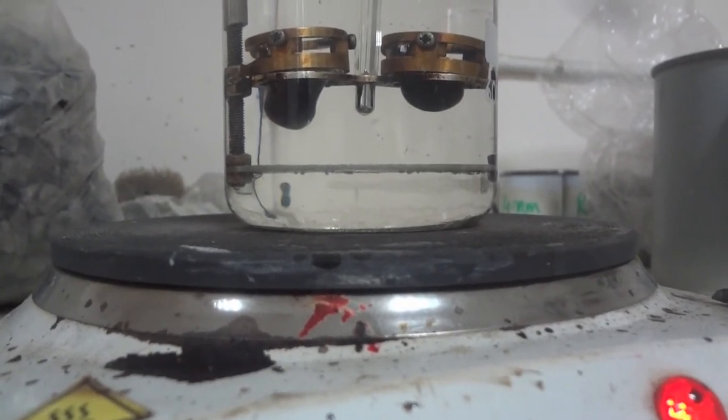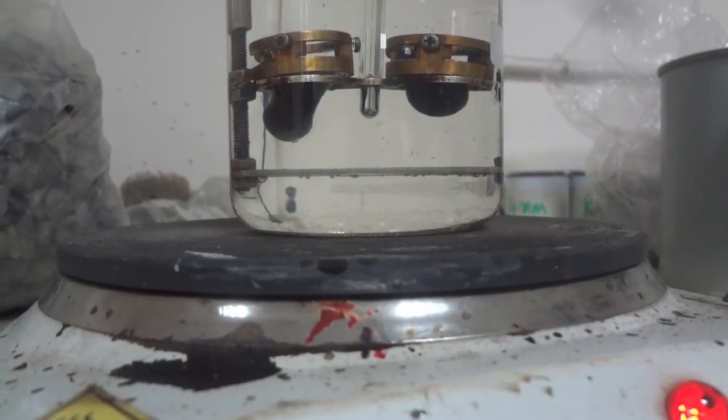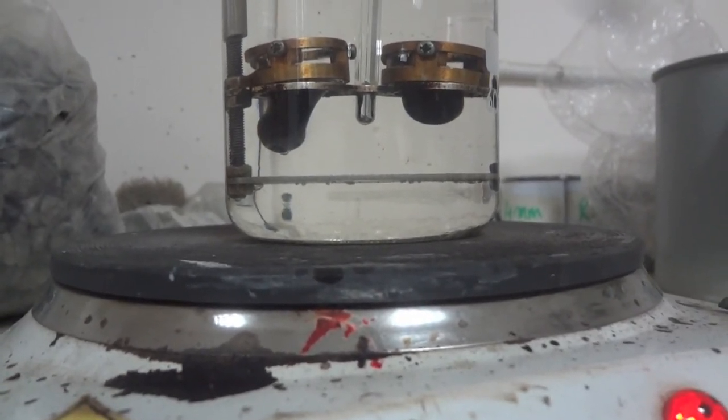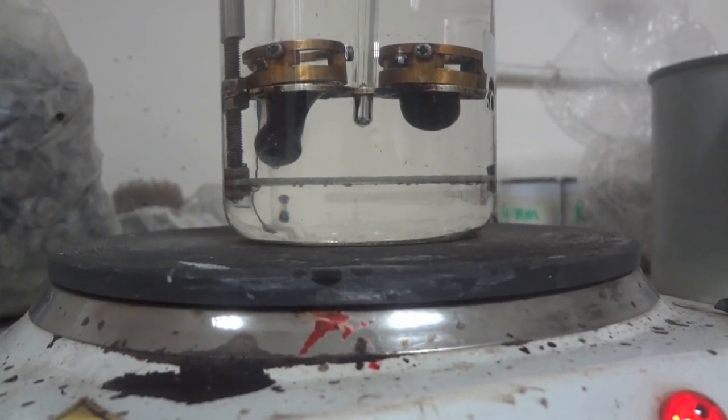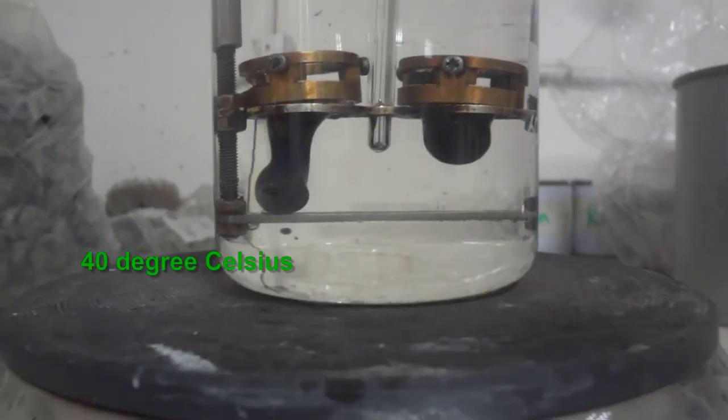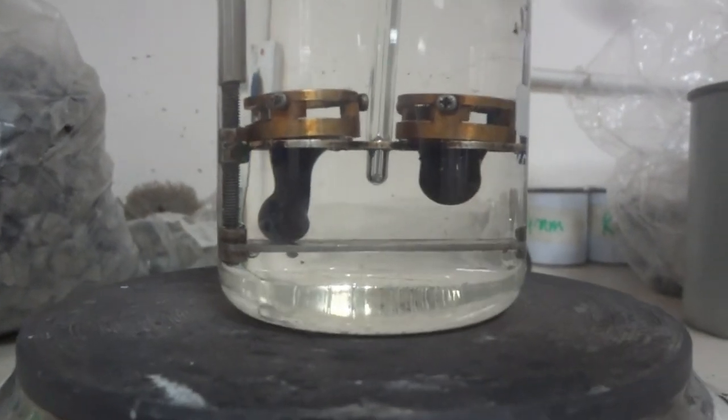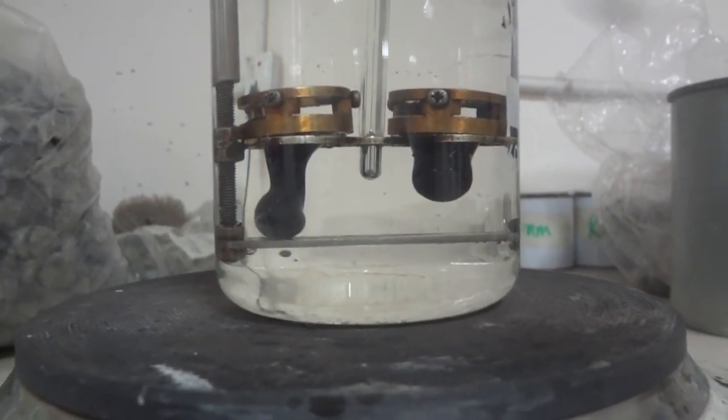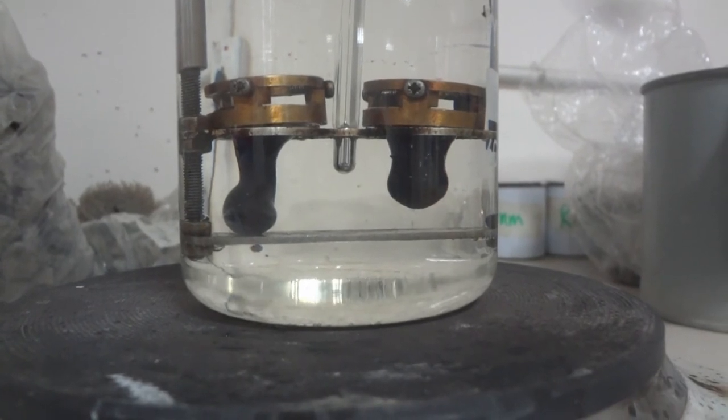As the temperature rises, the bitumen will become soft and the steel ball under its own weight will start falling down. Note down the temperature when the ball along with the bitumen just touches the bottom surface of the plate. Similarly, note down the temperature for the other ball too.